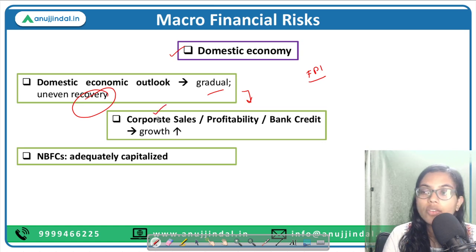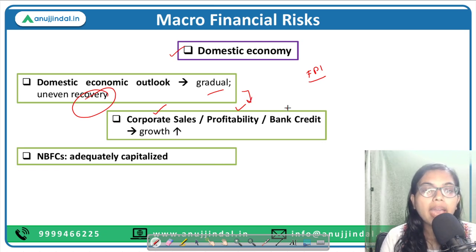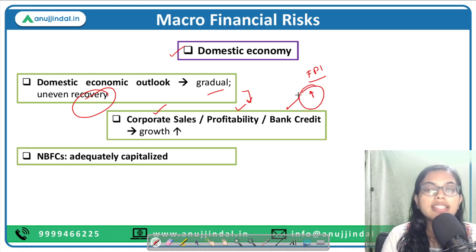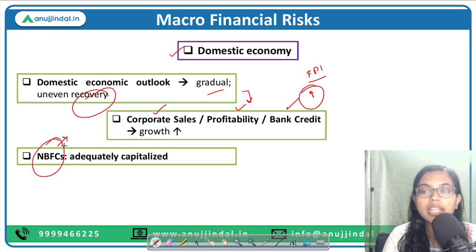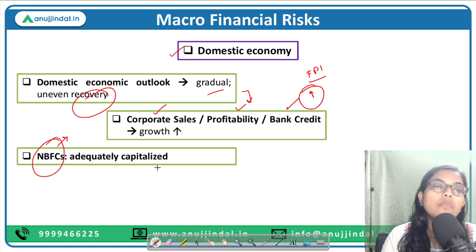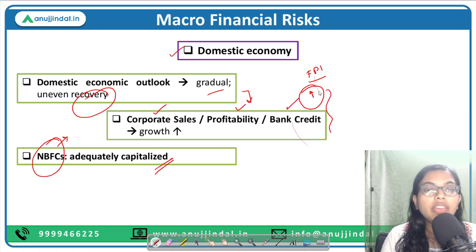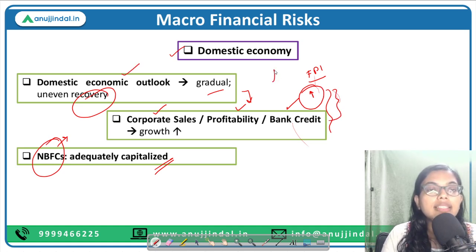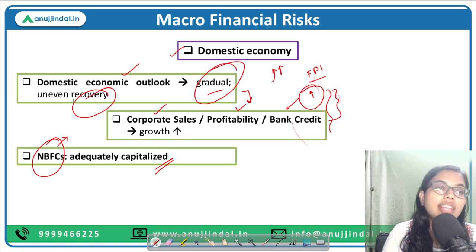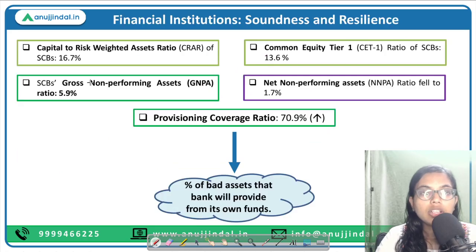This is based on certain positive indicators such as corporate sales, which has been increasing; profitability of companies, which has also been increasing; bank credit creation, which has picked up steadily; and NBFCs, which despite possessing systemic risks, have remained more capitalized and strengthened. All of these indicators indicate that our domestic economic outlook has been growing, though at a gradual and uneven rate.